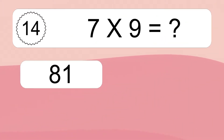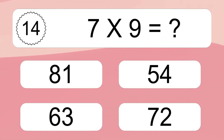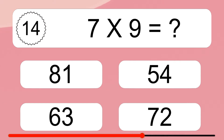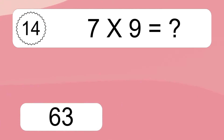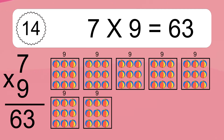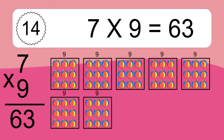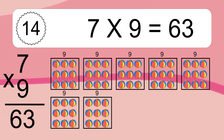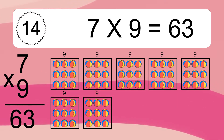Seven times nine equals what? Seven times nine equals 63. We have seven boxes, and each box has nine colorful balls inside. If you count all the balls in all the boxes together, you will have seven times nine balls. This equals 63 balls.